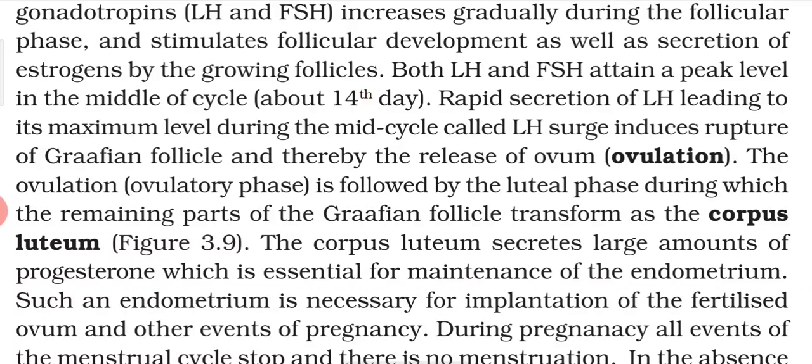During pregnancy, all events of the menstrual cycle stop and there is no menstruation. If the ovum is fertilized and pregnancy occurs, no menstrual cycle takes place throughout the entire duration of pregnancy.